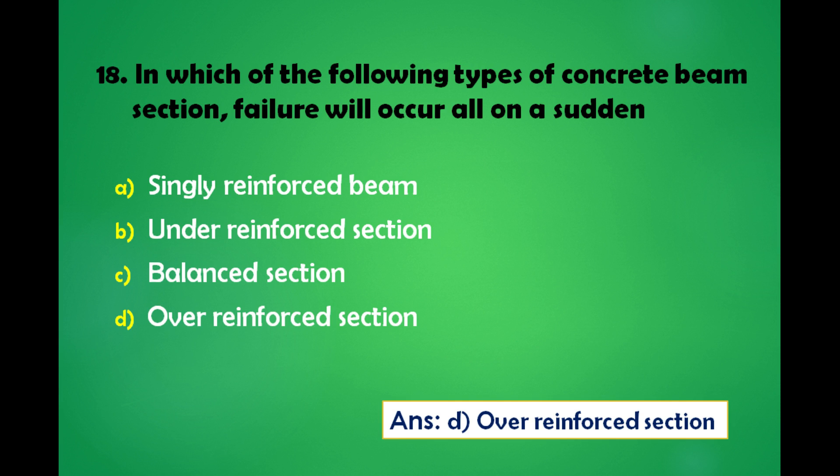In which of the following types of concrete beam section, failure will occur all of a sudden? A) Singly reinforced beam, B) Under reinforced section, C) Balanced section, D) Over reinforced section.